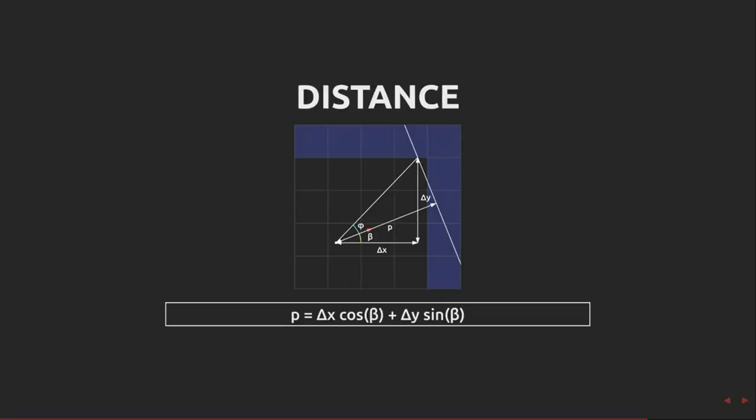Beta is the angle of the player's direction. Cosine beta and sin beta can be looked up in a sine and cosine table once per frame. We can calculate p with just two multiplies and an add. No square roots required.